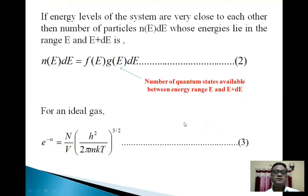Students, if energy levels of the system are very close to each other, then the number of particles n(E)dE whose energies lie in the range E and E+dE is given by this.